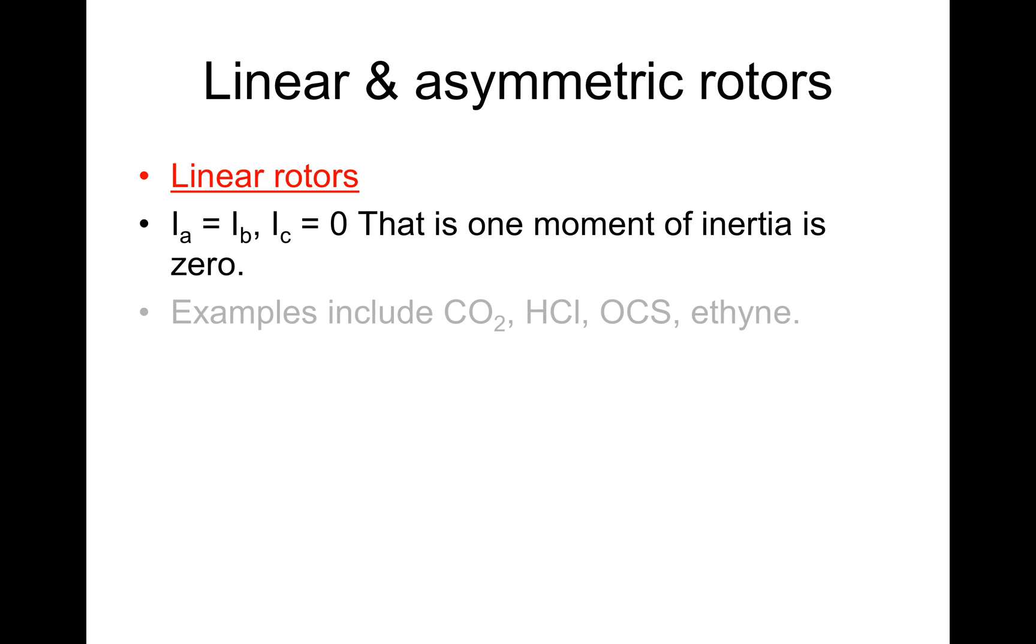Let's now look at the linear and asymmetric rotors. Starting with the linear rotors, in these the moment of inertia Ia equals Ib but Ic is not, that is one moment of inertia is zero. Examples include carbon dioxide, hydrogen chloride, CS which we looked at earlier, and ethane.